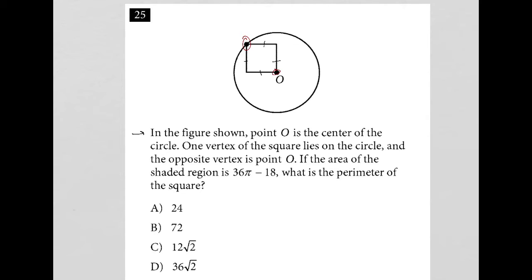If the area of the shaded region is 36π minus 18. So I don't see anything shaded here, so I'm not sure if I just have a bad version of this test. But let's see if we can figure this out. If the area of the shaded region is 36π minus 18, that must mean that the circle is shaded. Here's why I'm going to say that.